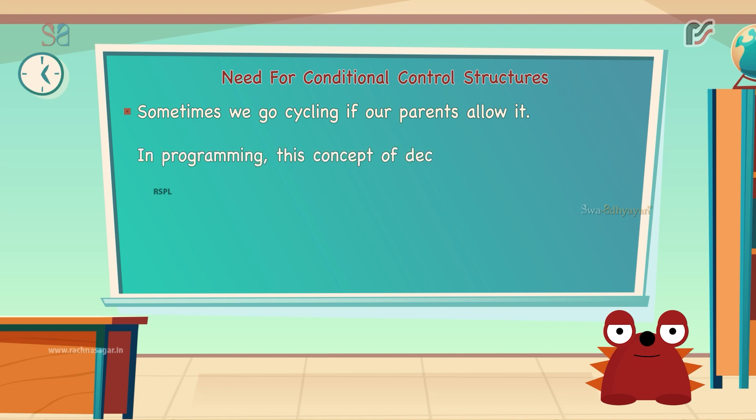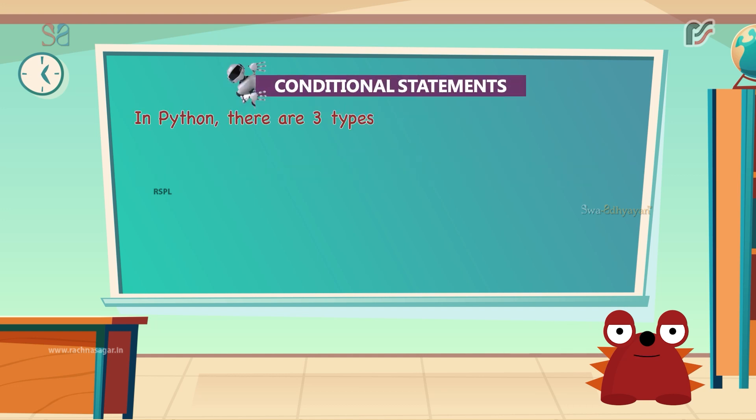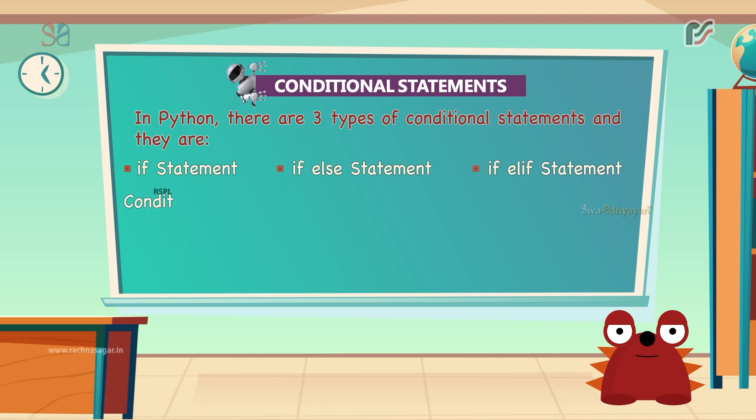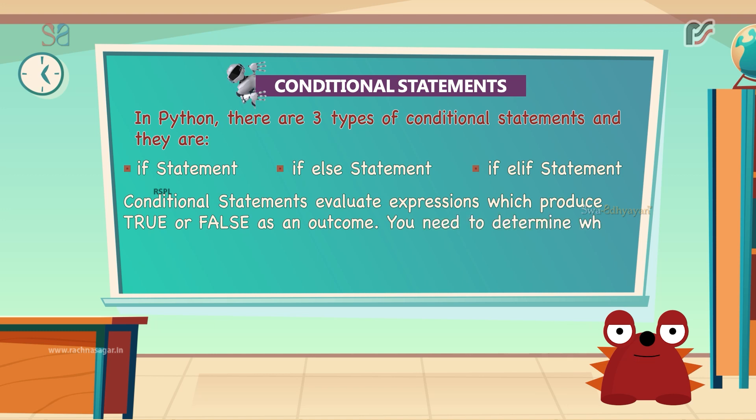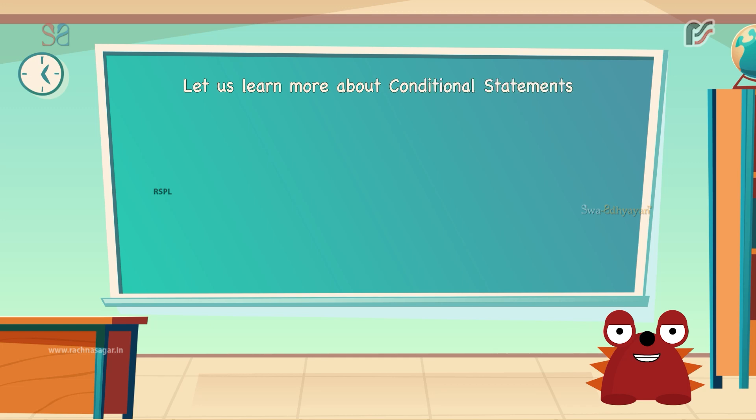So, in programming, this concept of decision making or selection is implemented with the help of conditional statements. In Python, there are three types of conditional statements: the if statement, if else statement and if elif statement. Conditional statements evaluate expressions which produce true or false as an outcome. You need to determine which action to take and which statements to execute if the outcome is true or false otherwise. Let us learn more about each of the three types.